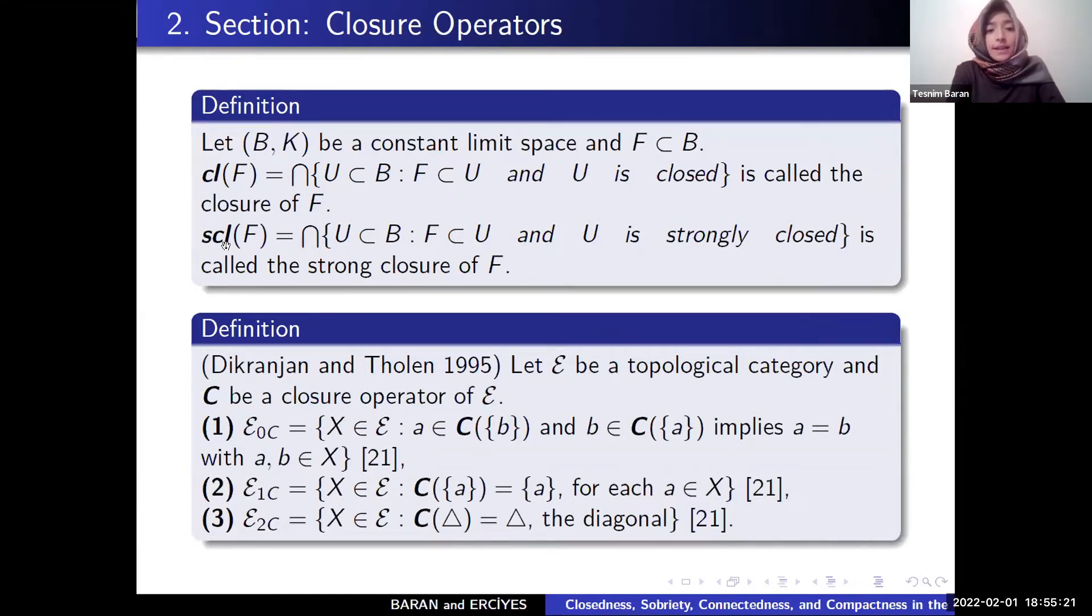DLF is called closure of A. The same as DL is called strong closure. The other definition: C is a closure operator of E, 1, E0, C, it means T0, E1, C, it means T1, E2, C, it means T2.